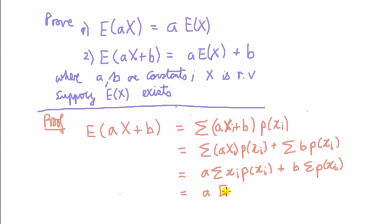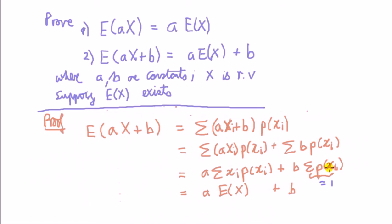That bit, you can see, is the definition of expected value of x. This thing is equal to 1. Well, we need it to equal 1 to get the result. Is it equal to 1? Yes. Why is it equal to 1? Because this says sum of probabilities. We know that sum of probabilities add to 1 if you sum the probability over all possible outcomes.